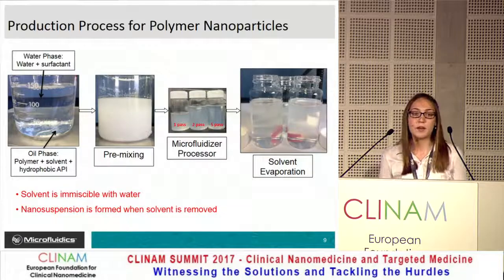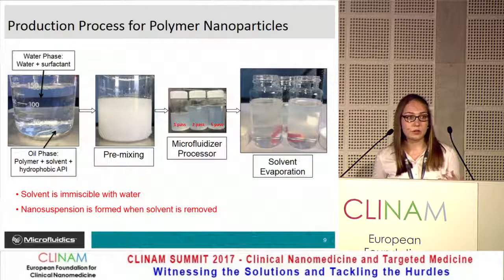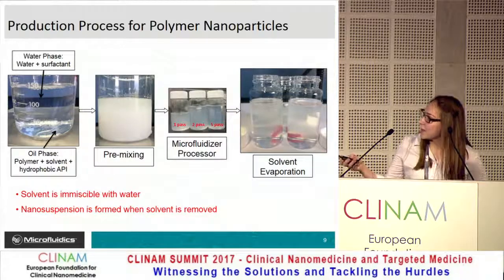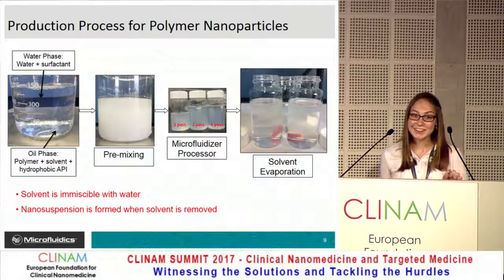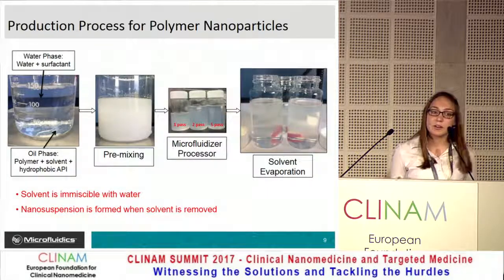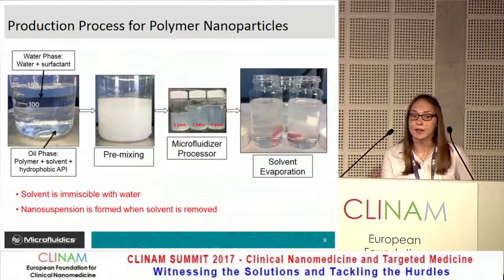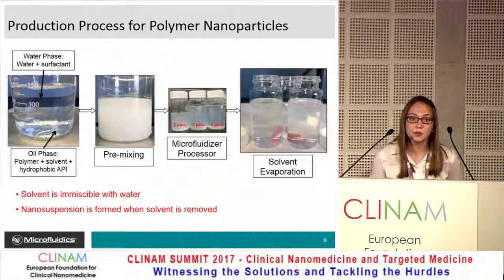To make polymer nanoparticles, we start with one percent PLGA in DCM, which is added to two percent PVA in deionized water, then mixed with a rotor-stator and processed through the microfluidizer. The more passes through the microfluidizer, the more translucent the material becomes, indicating a smaller particle size — ideal for injectables. The DCM is then allowed to evaporate at ambient temperature with uncapped vials, after which the nanoparticles are formed.